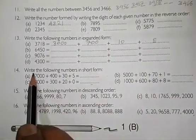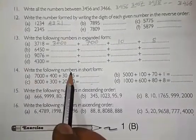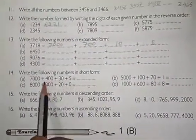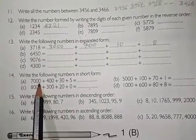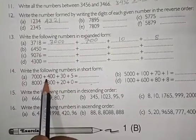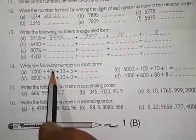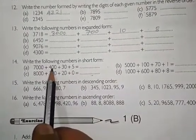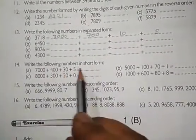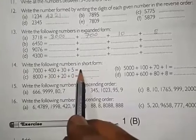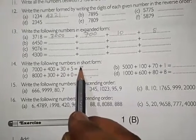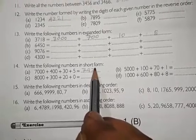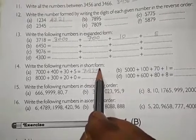Question number 14. Write the following numbers in short form. A: Here I have the expanded form. You change it into short form. Read 7,435. So you write here 7,435.